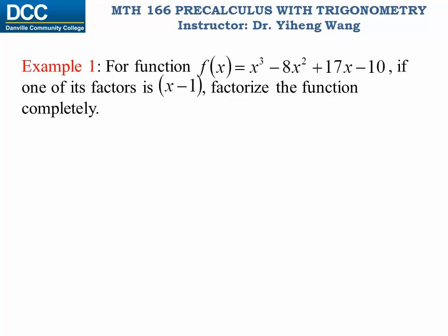In this example, for this third-degree polynomial function, if one of its factors is known to be x minus one, we need to completely factorize it. We're going to find the remaining factors by using synthetic division. So we first draw the symbol for synthetic division. Now we need to write down the coefficients only from the original function — we don't have to write down the complete original function, unlike what we did in long division.